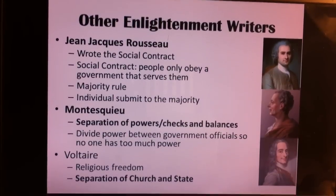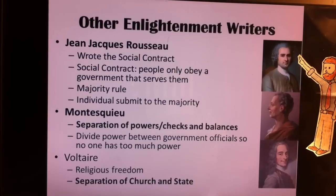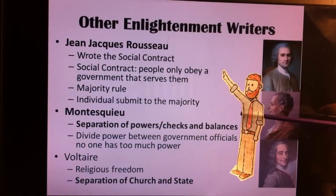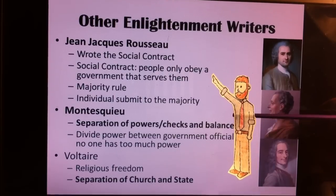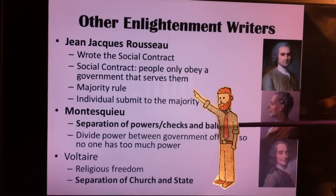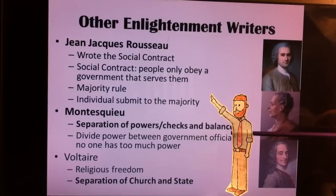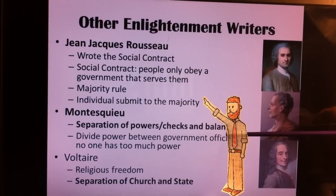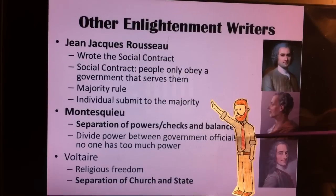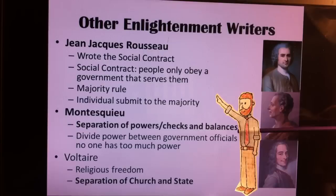There were some other famous Enlightenment writers. Jean-Jacques Rousseau was one really important one. He wrote a book called The Social Contract, similar to John Locke's idea. He believed that people only obey a government that serves them, and also believed in the idea that the majority should rule — whatever most people want is what the government should do, and the individual should submit to the majority even if they disagree.